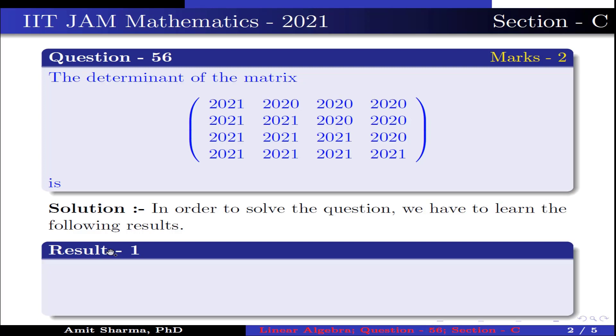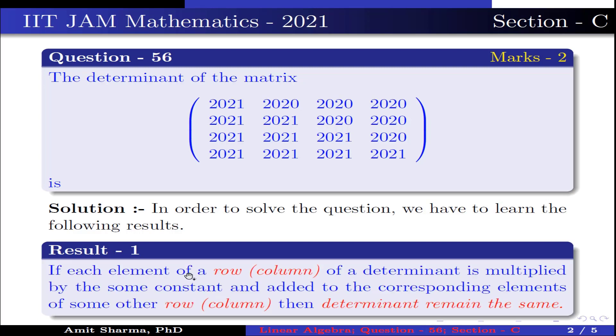Result number 1: If each element of a row or column of a determinant is multiplied by some constant and added to the corresponding element of some other row or column, then the determinant remains the same.